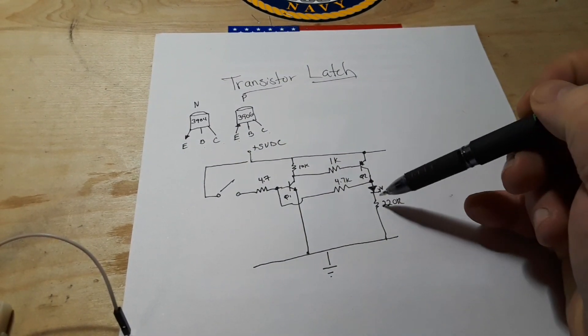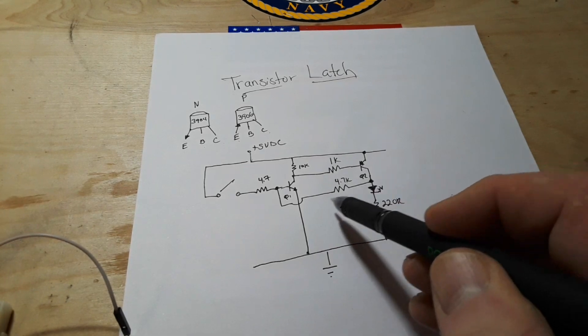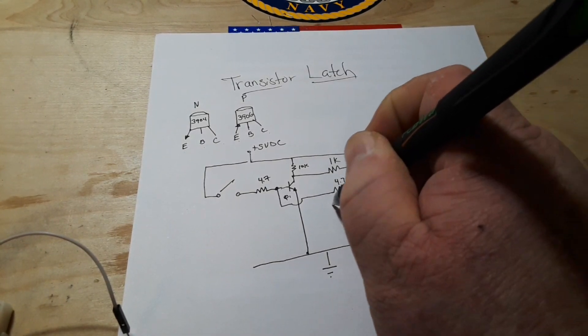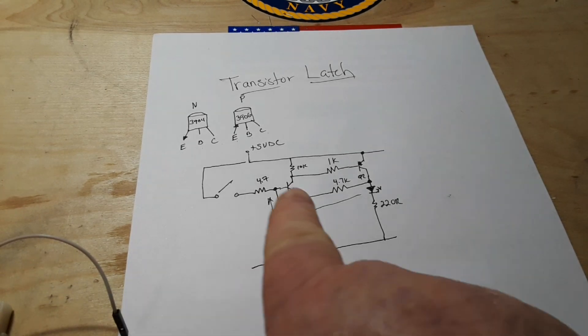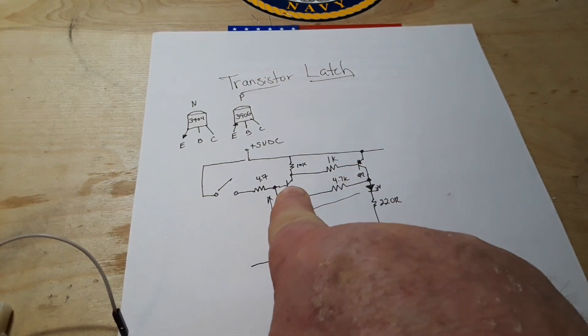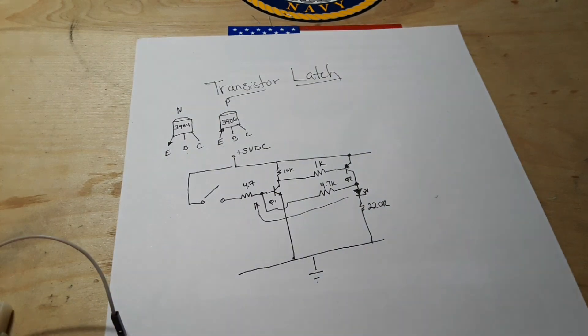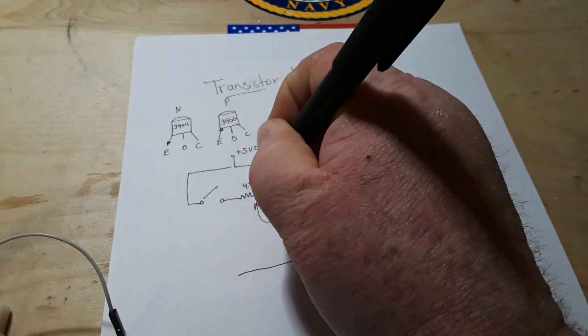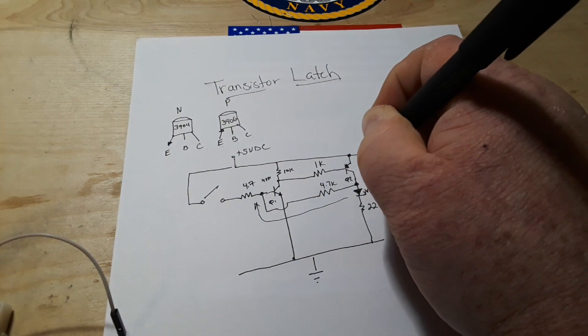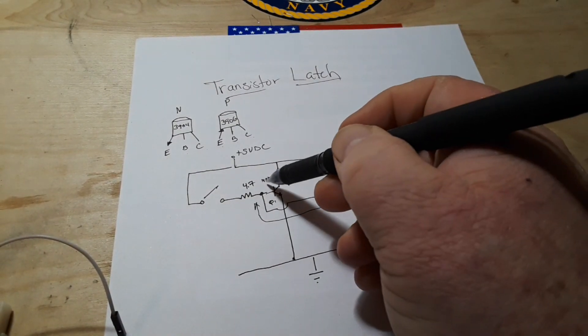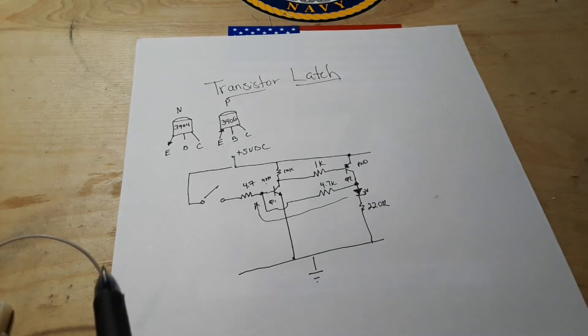That way once Q2 starts conducting we have a feedback loop here and that feedback loop will keep Q1 conducting and remember Q1 is our NPN. Q2 is our PNP. As long as this one conducts this one conducts and our latch stays on until we remove power.